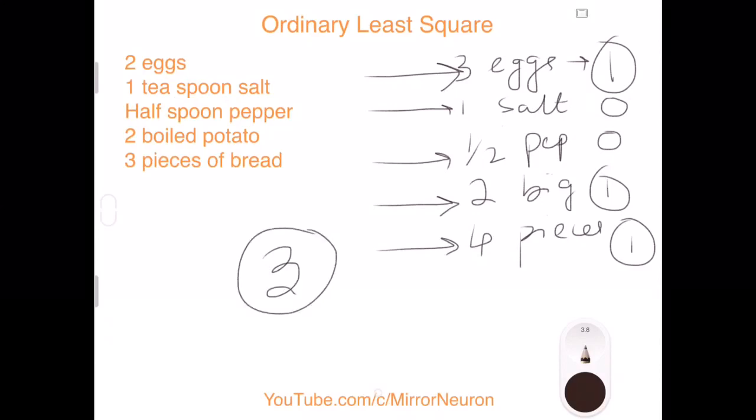Your grandma was there to tell you what was the mistake, and next time you could improve it. So instead of three, you would have taken two eggs, one teaspoon of salt, half a spoon of pepper, two medium-sized potatoes, and then you corrected it to three pieces of bread. Very tasty.